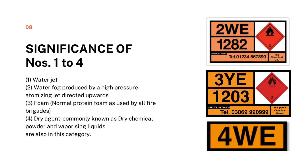The first part of the HAZCHEM code is a number from one to four, which tells us about the type of extinguisher to be used at the time of emergency. If the number is 1, use a water jet extinguisher. If it is 2, use a water fog extinguisher. If it is 3, use a foam type extinguisher. If it is 4, use a dry agent, commonly known as dry chemical powder.